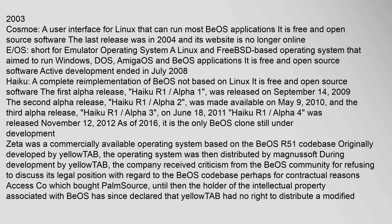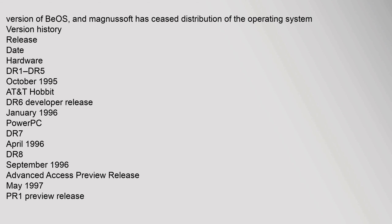Zeta was a commercially available operating system based on the BeOS R5.1 codebase, originally developed by Yellowtab and then distributed by Magnussoft. The company received criticism from the BeOS community for refusing to discuss its legal position with regard to the BeOS codebase, perhaps for contractual reasons. Access Co., which bought PalmSource and became the holder of the intellectual property associated with BeOS, declared that Yellowtab had no right to distribute a modified version of BeOS, and Magnussoft has ceased distribution of the operating system.